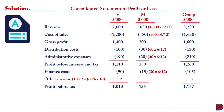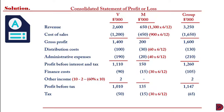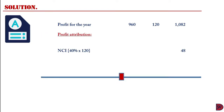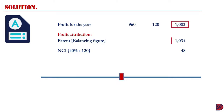Profit before tax is $1,010 for Viki and $135 for M, giving $1,145 for the group. After taxation, profit for the year is $960 for Viki, $120 for M, and $1,082 for the group. For profit distribution, the non-controlling interest is $48, which is 40% of the $120 profit for the year of the subsidiary. The parent's share is the resulting figure: $1,082 less $48, giving $1,034.